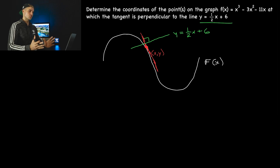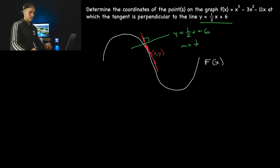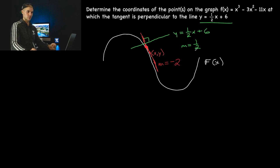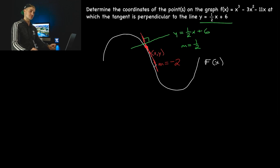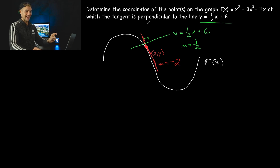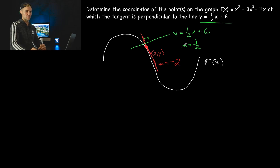How do the slopes of two perpendicular lines relate? If we know the slope of this green line is one half, the slope of the tangent is going to be the negative reciprocal of that, which is negative two. The negative reciprocal of one over two is negative two over one, which is just negative two. So we're trying to find the coordinates on this function where the slope of the tangent is going to be negative two.